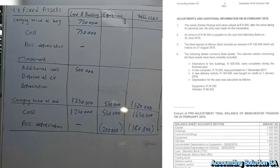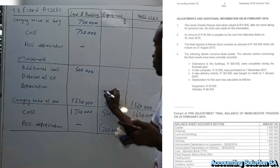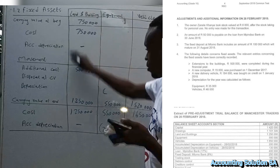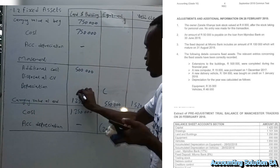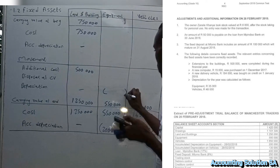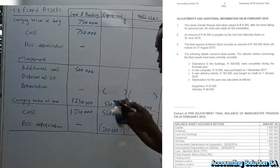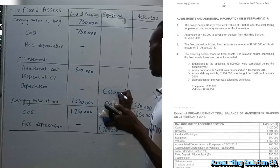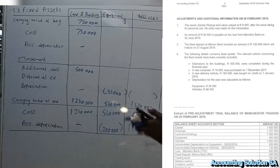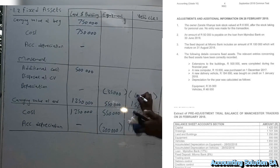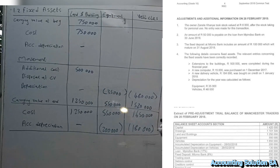Now let's look at the depreciation for the year, from the last piece of additional information. Note that land and building have no depreciation. Depreciation must be written in brackets. For equipment, depreciation for the year was given as 35 000, and for vehicles it was given as 48 000.